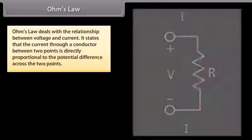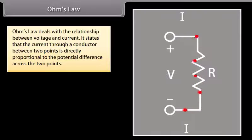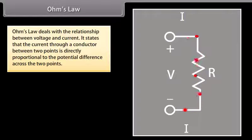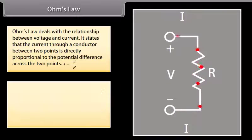Ohm's law deals with the relationship between voltage and current. It states that the current through a conductor between two points is directly proportional to the potential difference across the two points.